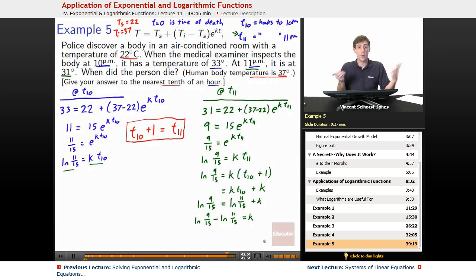We subtract natural log of 9 over 15 minus natural log of 11 over 15 equals k. That's natural log of 9 over 15 divided by 11 over 15. Since we're dividing by 15 on the top and the bottom, they cancel out and we're left with the natural log of 9 over 11 equals k. We take the natural log of 9 divided by 11 in our calculators and we wind up getting negative 0.20067 as our constant for k.